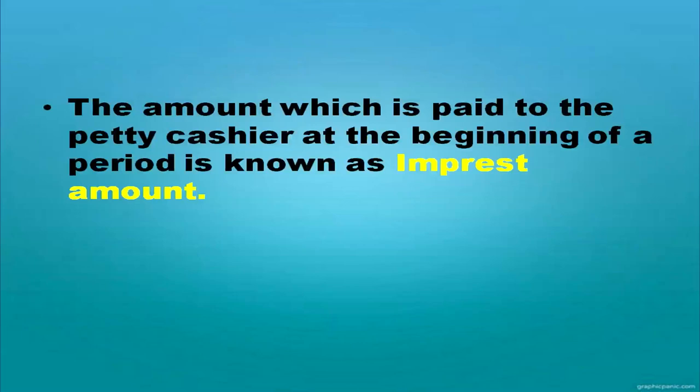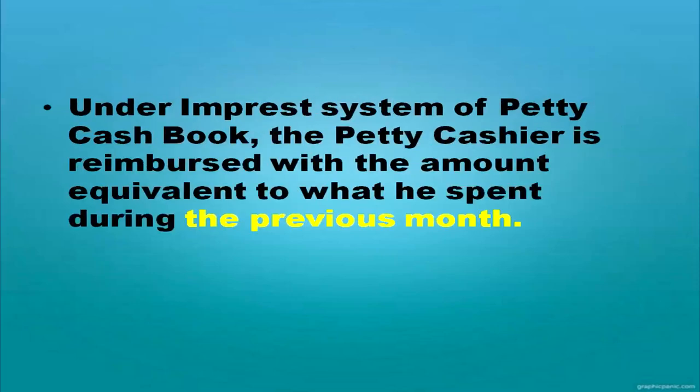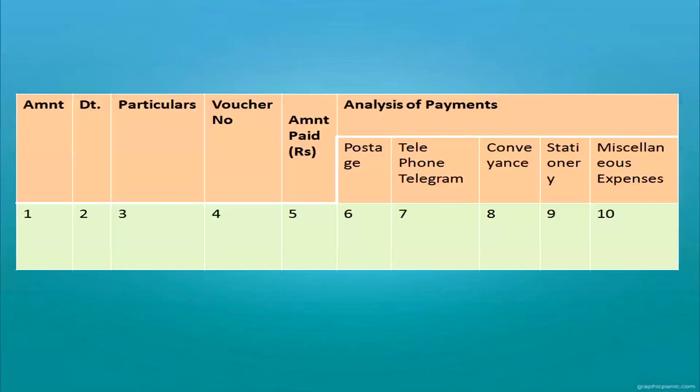The amount paid to the petty cashier at the beginning of a period is known as the imprest amount. Under the imprest system of petty cash book, the petty cashier is reimbursed with the amount equivalent to what he spent during the previous month. The format of the petty cash book includes: amount, date, particulars, voucher number, amount paid, and its bifurcations like postage, telephone expenses, telegram, conveyance, stationery, etc.